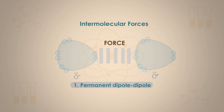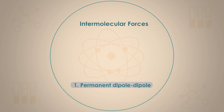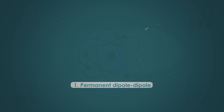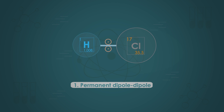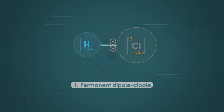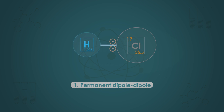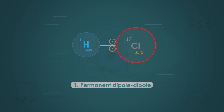First up are permanent dipole-dipole forces. A polar molecule is one in which there is a permanent dipole, arising usually because the different atoms in the molecule have different electronegativities — the attraction by a bonded atom for the pair of electrons in a covalent bond. Let us take hydrogen chloride as an example. Hydrogen chloride is a polar molecule, as the pair of electrons in the hydrogen-chlorine bond are nearer to the chlorine atom. The chlorine atom has a stronger attraction to the electrons because it has a greater electronegativity than the hydrogen atom.